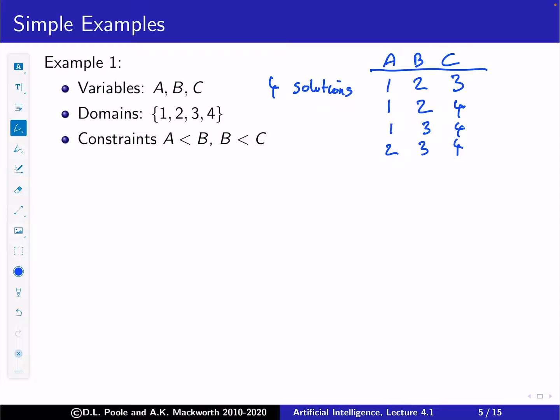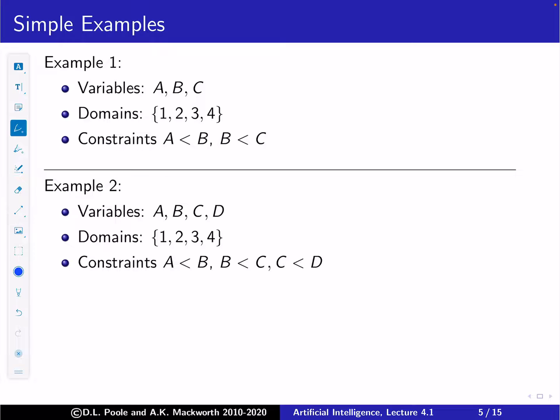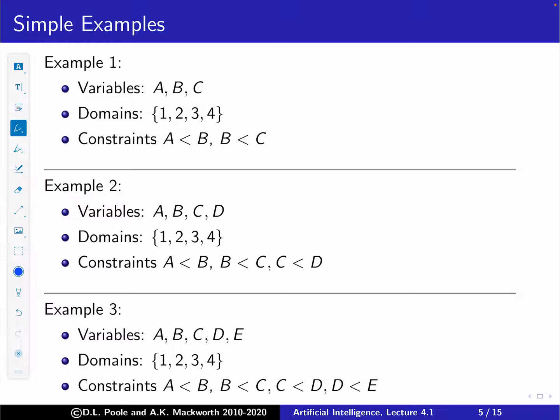Here's another example with variables A, B, C, D and constraints A < B, B < C, and C < D. There is only one solution: A=1, B=2, C=3, D=4. Every other assignment violates one of the constraints.